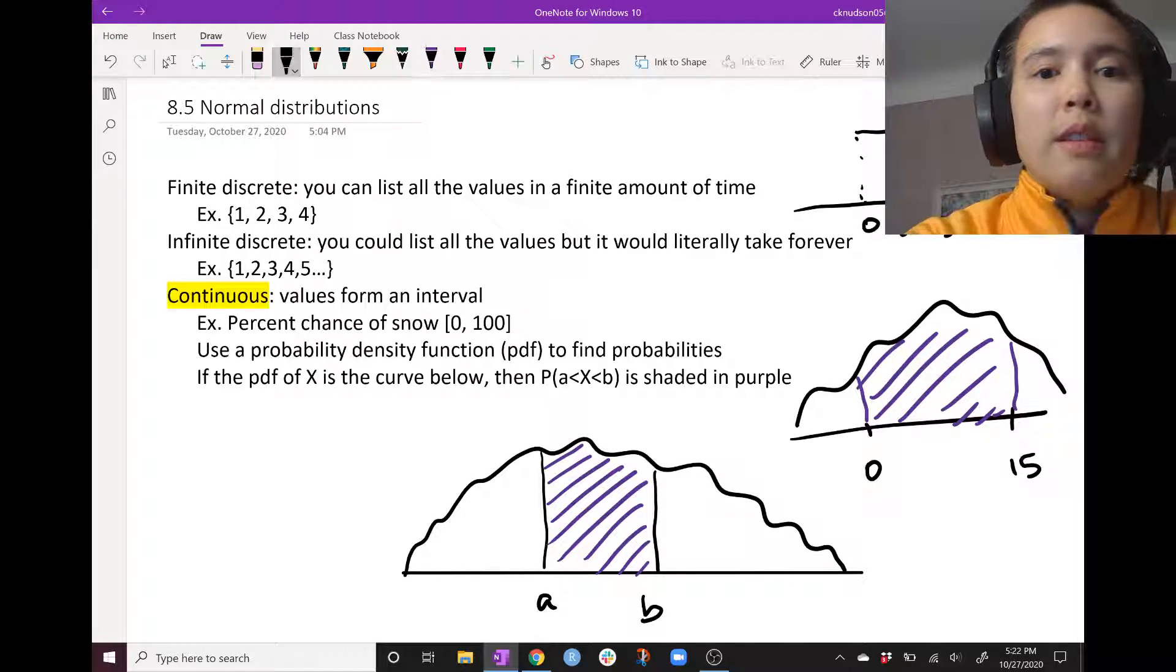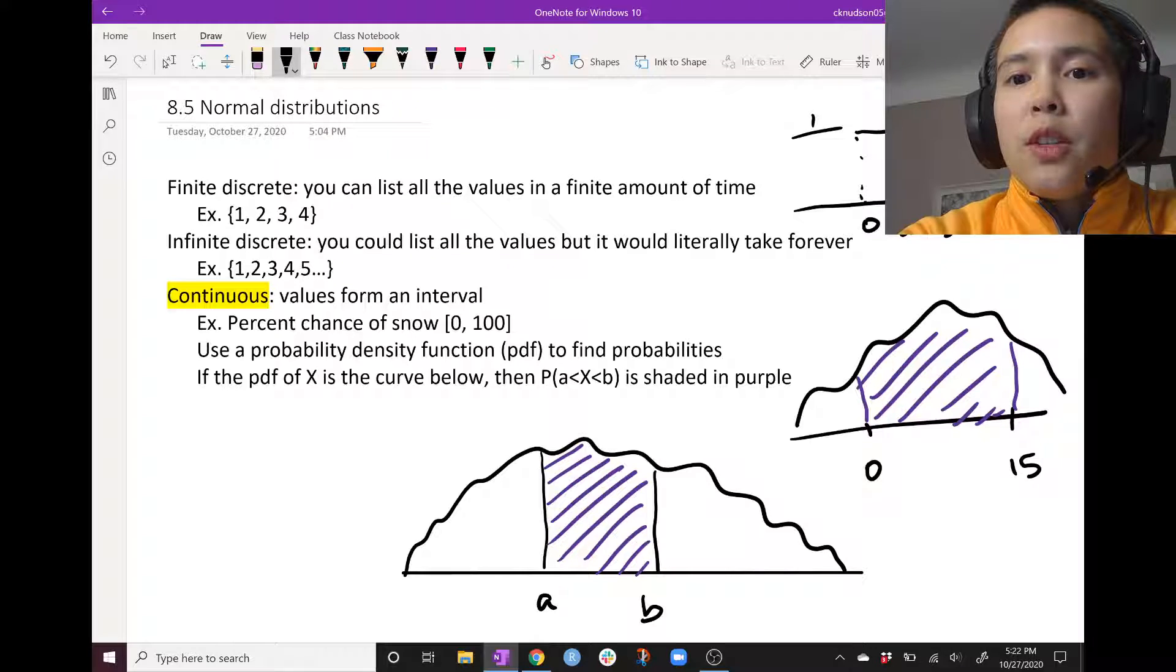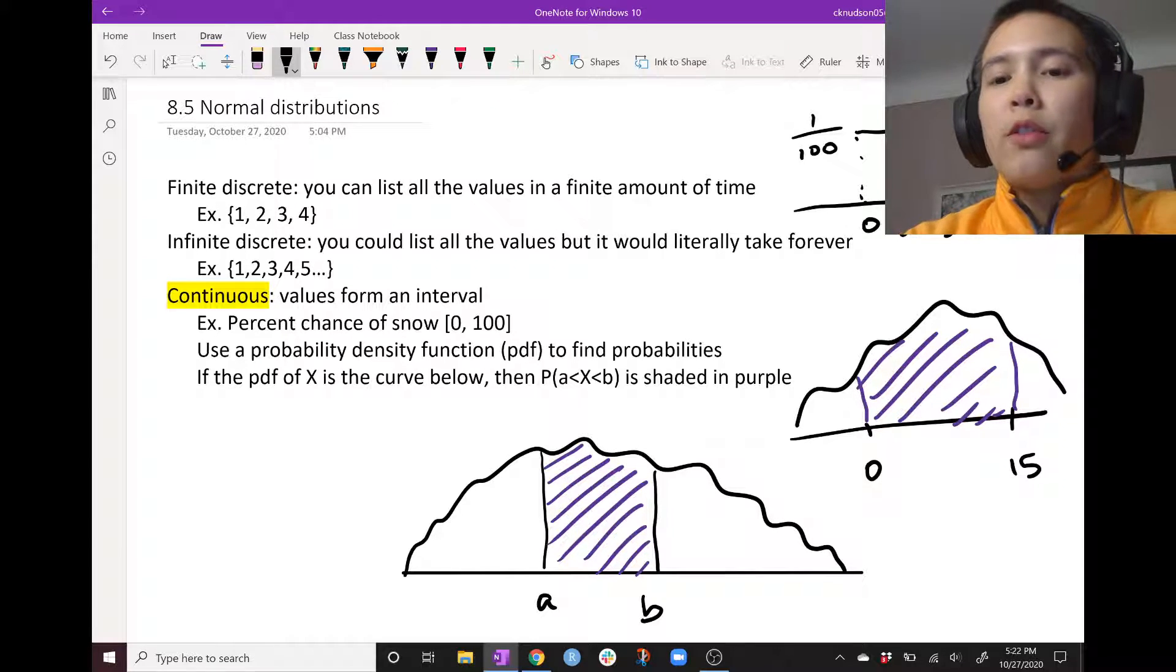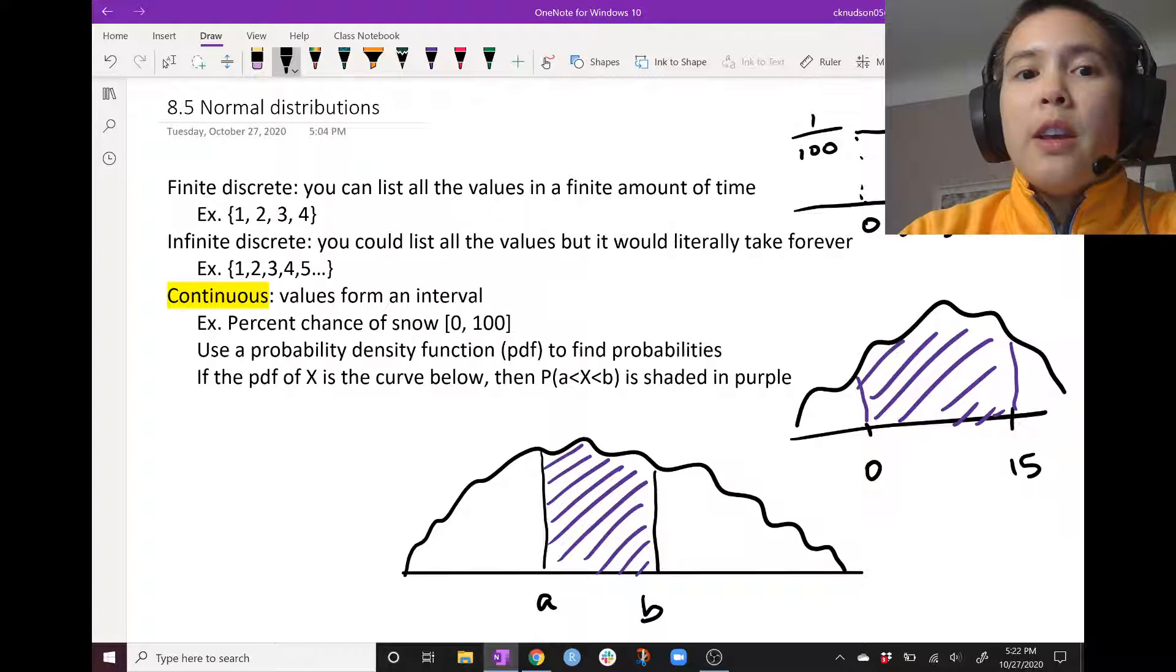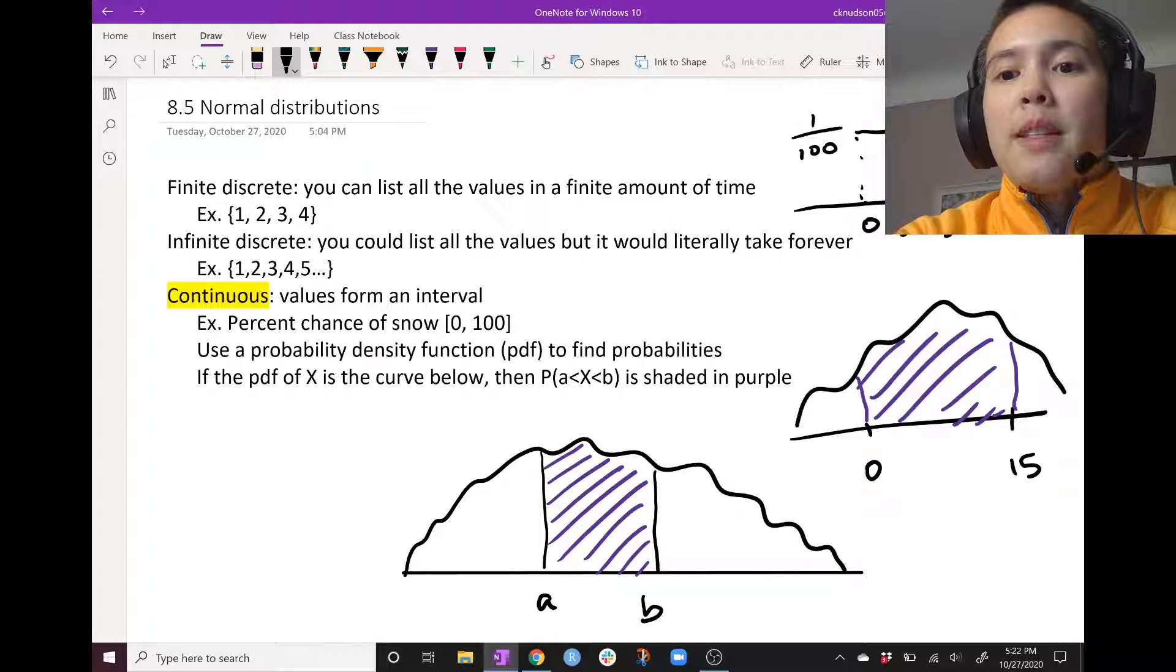And since this function would have height 1 over 100 here, we could calculate this probability is just the area of that rectangle. And we know that the area of the rectangle is the base times the height. This base has width 30 or in other words, 50 minus 20.